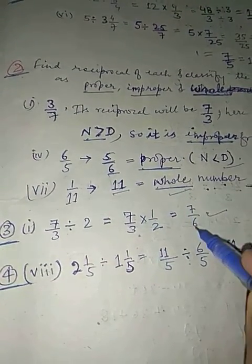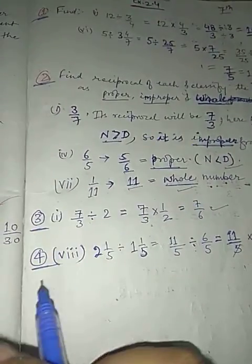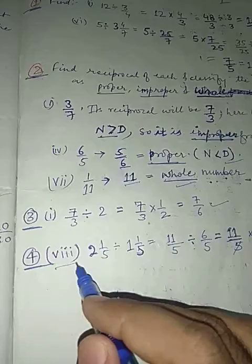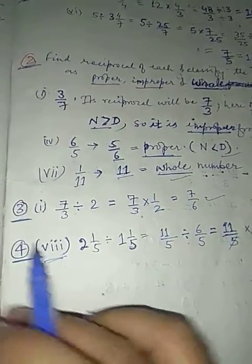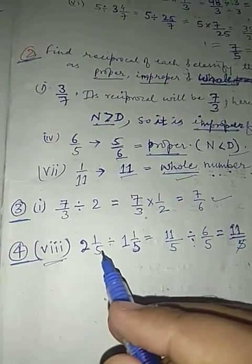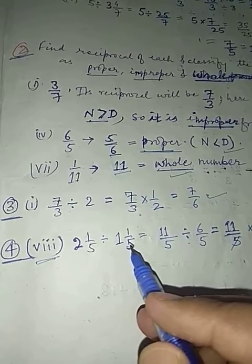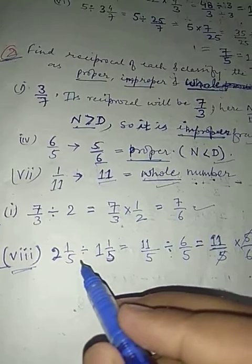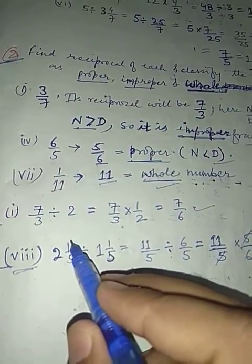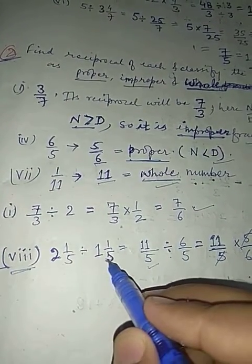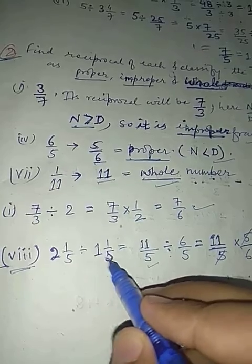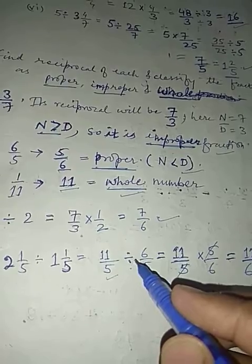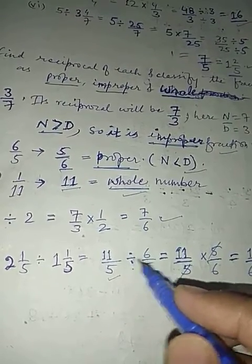Fourth part, last part I have taken, question 8: 2 whole 1 upon 5 divided by 1 whole 1 upon 5. Both are mixed fractions. 2 whole 1 upon 5 means 5 times 2 is 10, plus 1 is 11 upon 5. 1 whole 1 upon 5 is 5 times 1 is 5, plus 1 is 6 upon 5. The same way, sign changes from divide to multiply, and take reciprocal. 11 upon 5 into 5 upon 6. Five and 5 will cancel out.